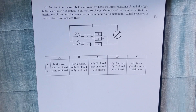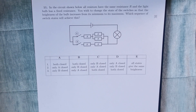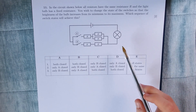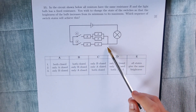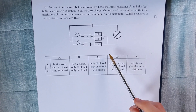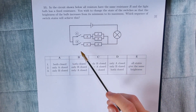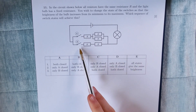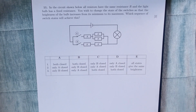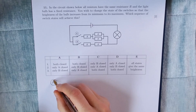In the circuit shown below, all resistors have the same resistance R, and the light bulb has a fixed resistance. You wish to change the state of the switches so that the brightness of the bulb increases from its minimum to its maximum. Which sequence of switch states will achieve this? The first thing we need to consider is the condition for the lamp to be its brightest. When the lamp is brightest, it has the biggest power output, which means the biggest voltage, and therefore this resistor network has the least resistance. Conversely, when the lamp is at its dimmest, the resistor network has its greatest resistance.